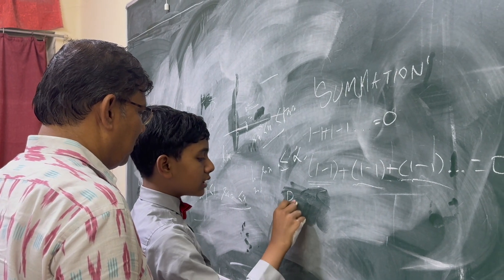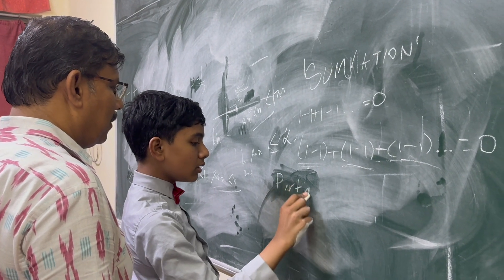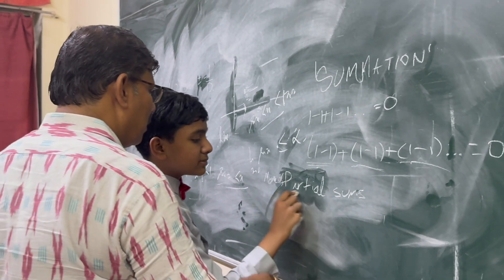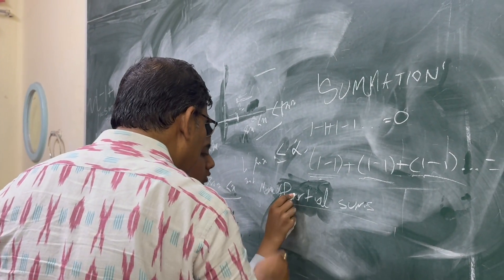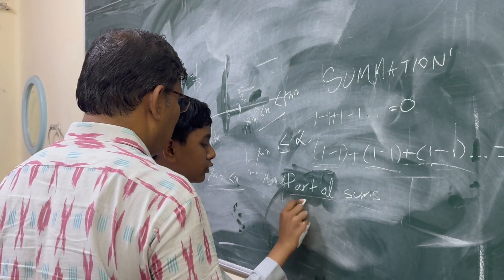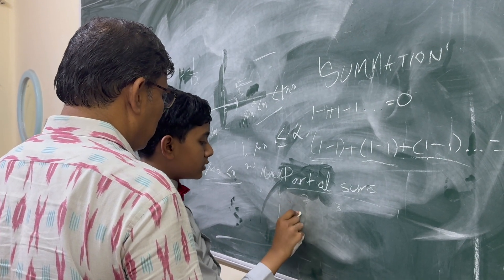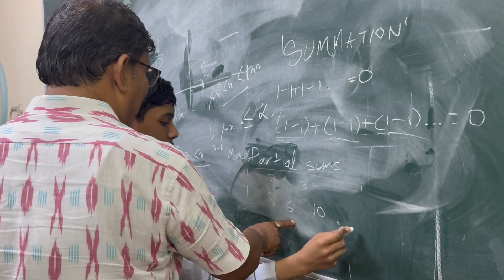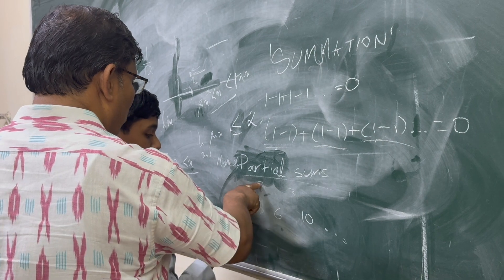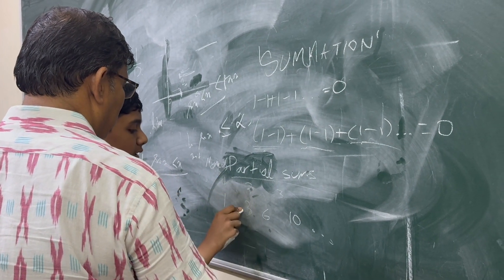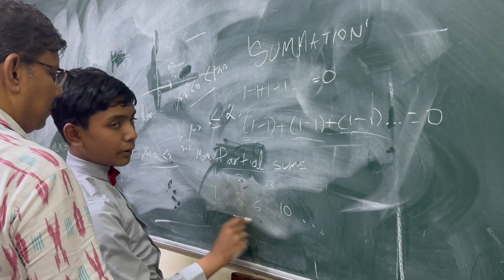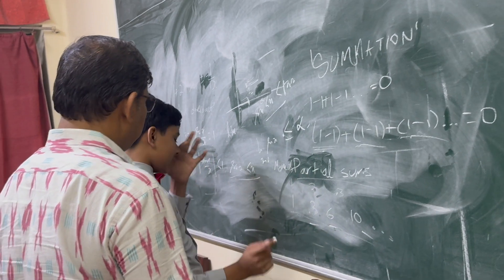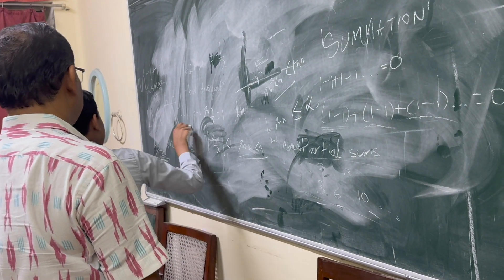We can expand the definition of summation — essentially, we can take the mean of the partial sums. So if you're summing 1, 2, 3, etc., you get 1, then 1 plus 2 is 3, then 3 plus 3 is 6, then 10, etc. This is the partial sum function. So if you apply it to 1 minus 1 plus 1, it gives you this sequence — we go through the algorithm: 1, 0, 1, 0.